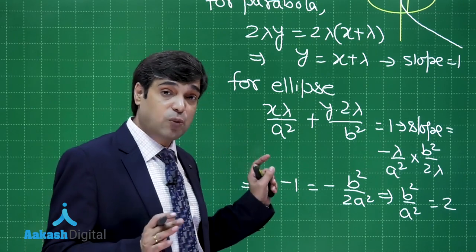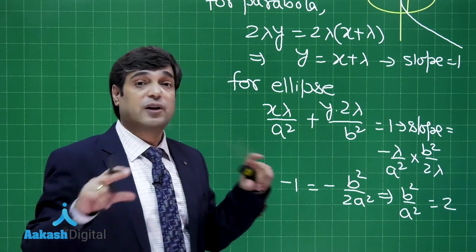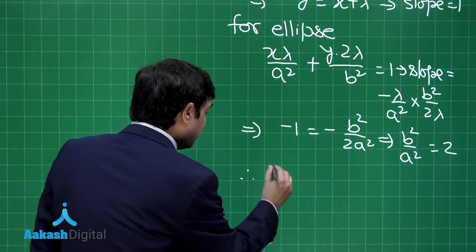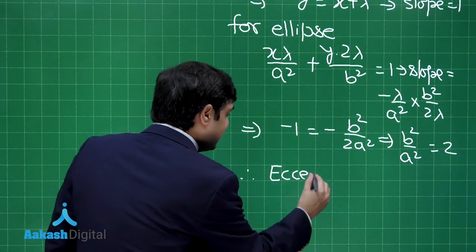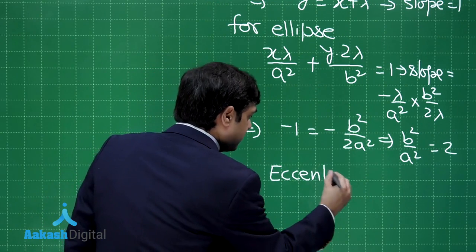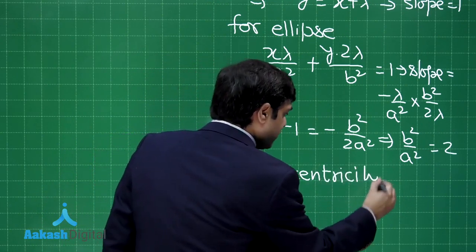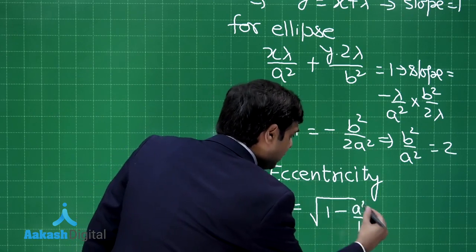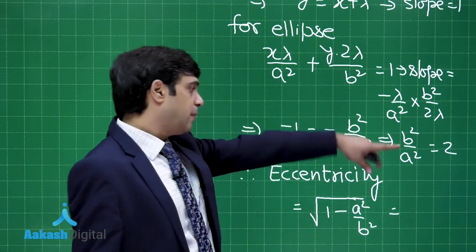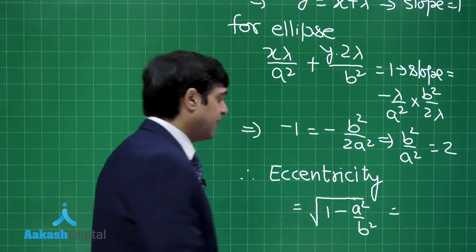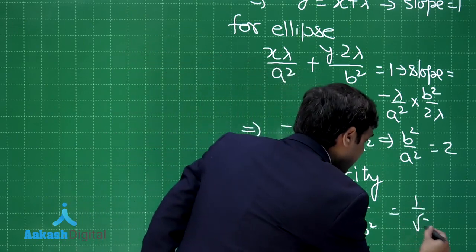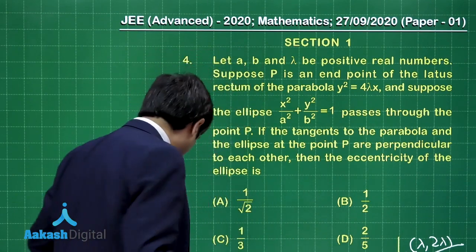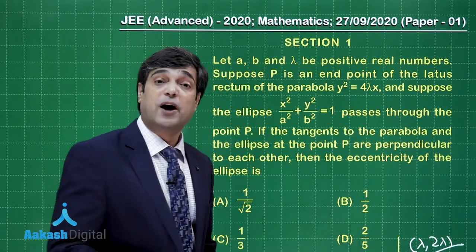So clearly we can say here b square is 2a square or b is root 2 times a. So yes, the ellipse which is opening it is along y axis, not along the x axis. Eccentricity. Therefore, eccentricity, this is square root of 1 minus a square by b square. a square by b square that is half. 1 minus half will give you simply 1 by 2 and take its square root. So this is 1 by root 2. So the required result for this question is 1 by root 2.